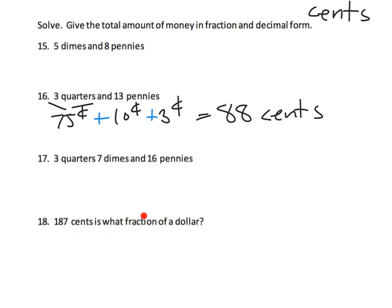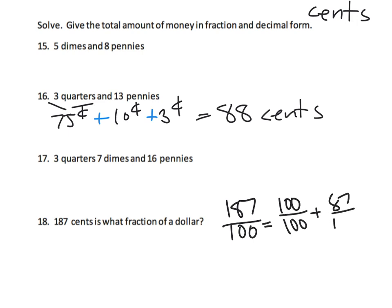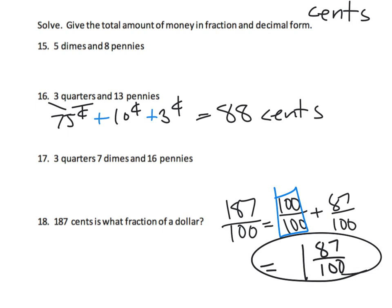Now, 188 cents — what fraction of a dollar is that? Well, 188 over 100 equals 100 hundredths plus 87 hundredths. Using decomposition, we know 100 hundredths is one whole dollar, so that equals one and 87 hundredths of a dollar.